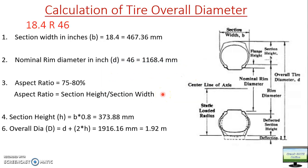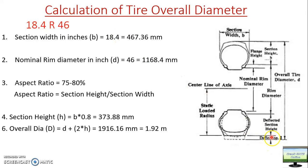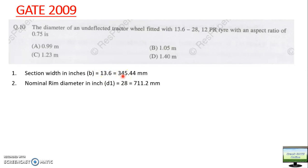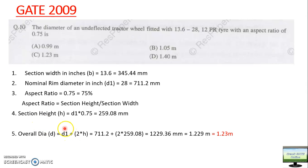This calculation method is the same for both bias ply and radial tire — the only difference is R for radial and dash for bias ply. In GATE 2009, they asked: given a 13.6-28 tire with 0.75 aspect ratio, calculate the undeflected diameter. Given data: section width 13.6 inches, nominal rim diameter 28 inches, aspect ratio 0.75. Calculate section height from aspect ratio, then overall diameter = nominal rim diameter + 2 × section height. The answer comes out to 1.23 meters — option C.